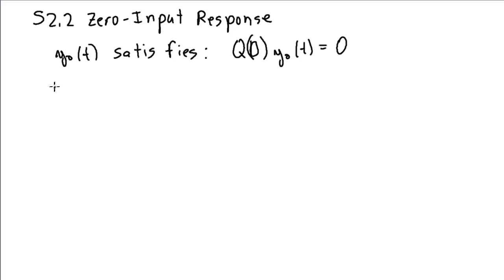Again, expanding that out, we get this polynomial in D directly from our differential equation. And this is the most general form. It's usually simpler in any specific case. y zero of t is equal to zero.